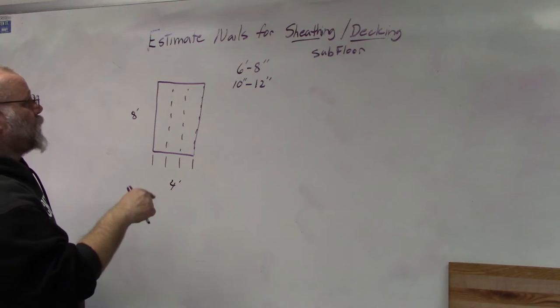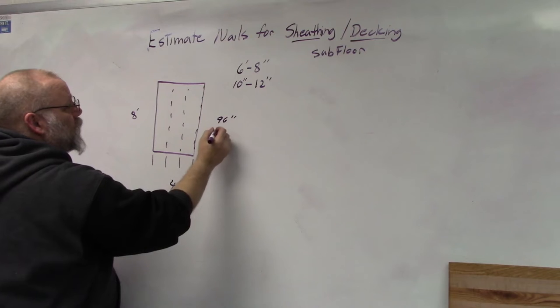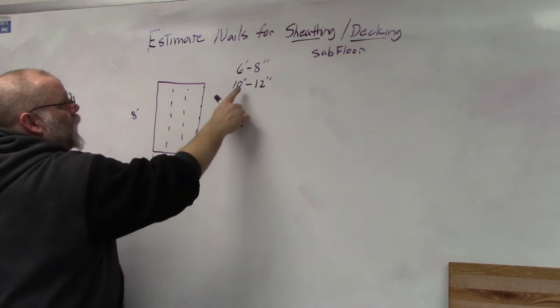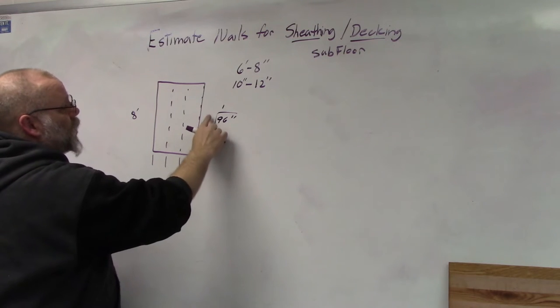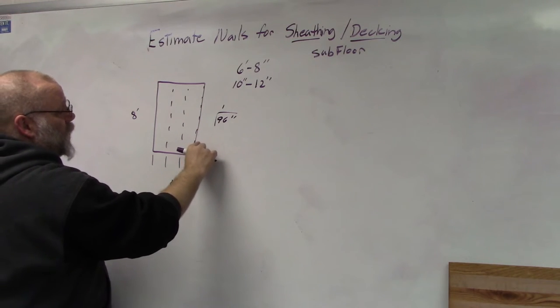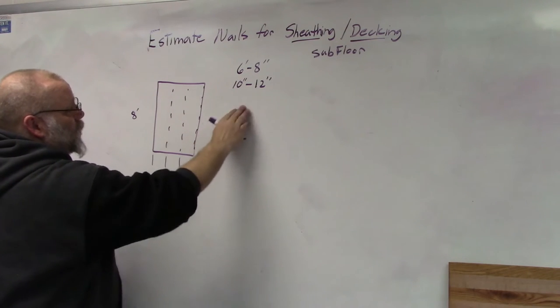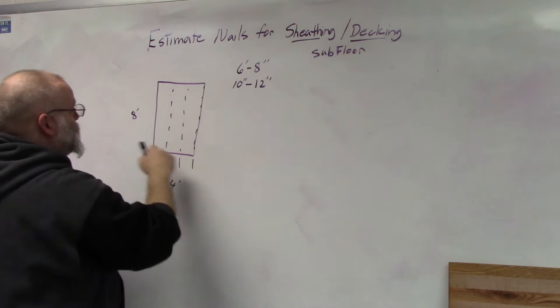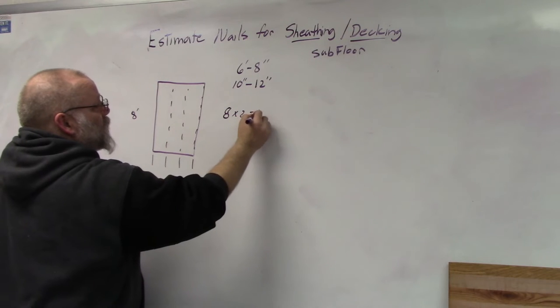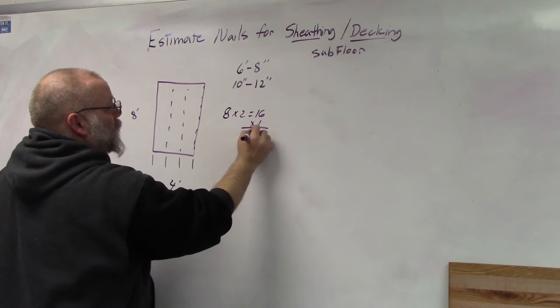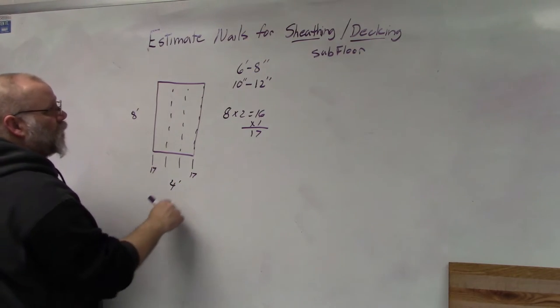Eight feet is 96 inches, so if we divide that by six inches, you're going to put two nails for every foot and then add one for the beginning. So eight feet, eight times two is 16 nails plus one for the beginning, so that's 17. This one will be 17 and this will be 17.